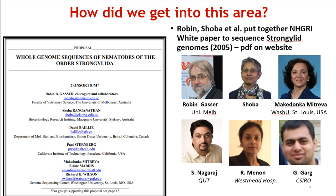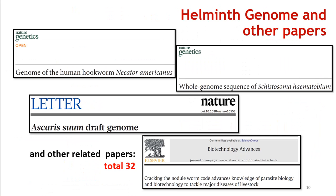Nematodes being the roundworms, and currently many other worms are also being independently sequenced by other sequencing centers. Three PhD students worked on these projects: Shiv Nagaraj, now at QUT; Ranjita Menan, now at Westmead Hospital; and Gagan Garg, who's now at CSIRO. We have a few genome papers out of this in Nature, Nature Genetics, and Biotechnology Advances, plus another 28 papers bringing the grand total to 32 on this effort.